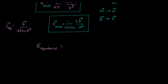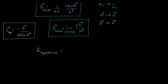And there is one more thing — there is a negative sign. So since this is behaving identically, my B-equatorial should be half of B-axial with a negative sign. So it is minus mu naught m upon 4 pi x cubed.